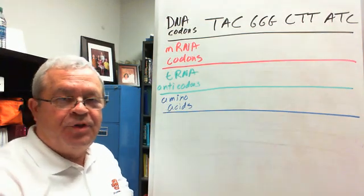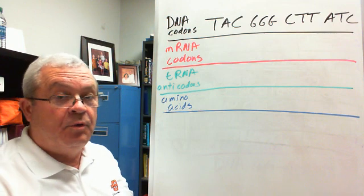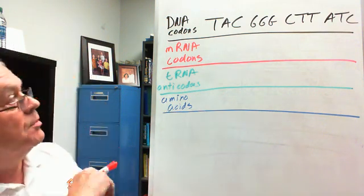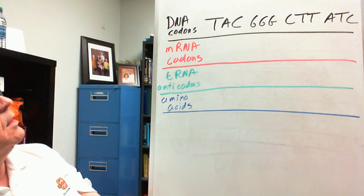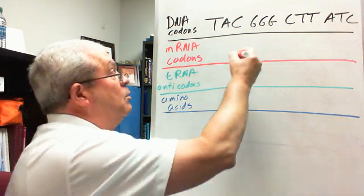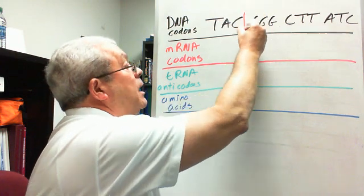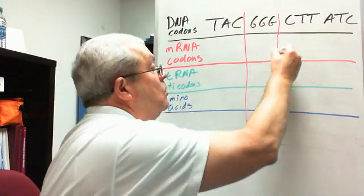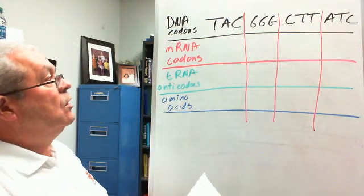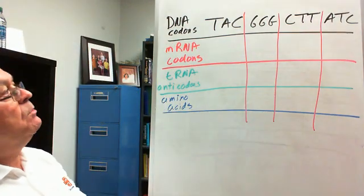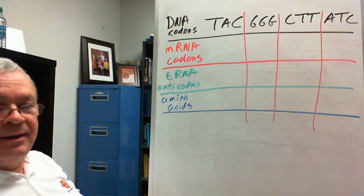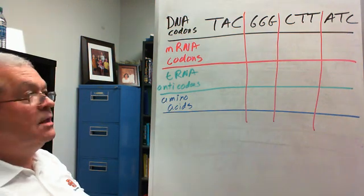All right, your first genetic code problem. Before we go to the actual chart, we're going to kind of set the problem up. The way the problem will be set up is like this: you'll be given some DNA codons, and what I would do is draw a line between the codons, like this. You might just pause and write those down, and then come back and let's continue.